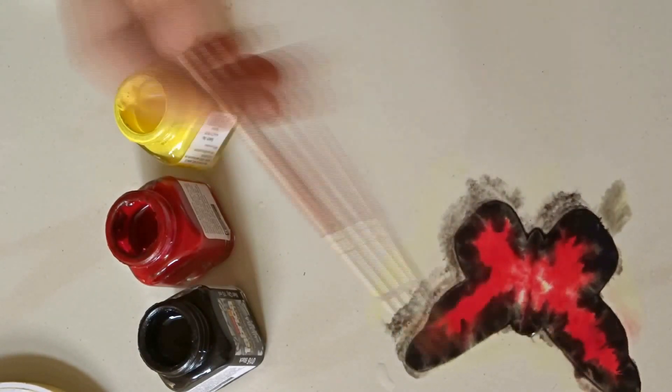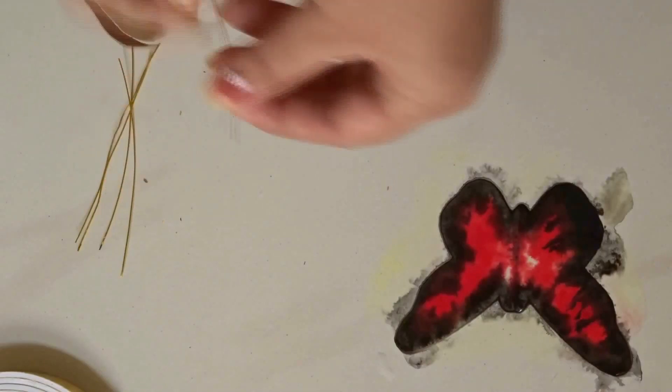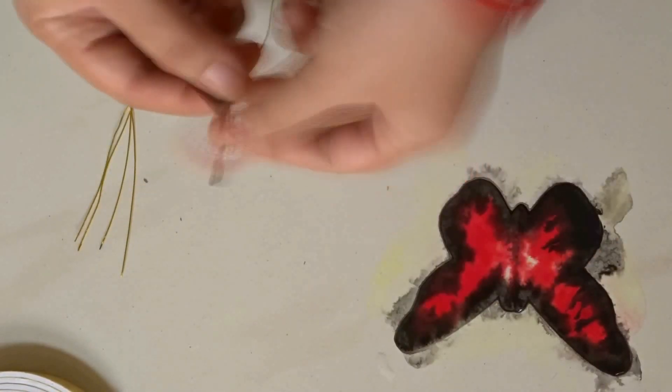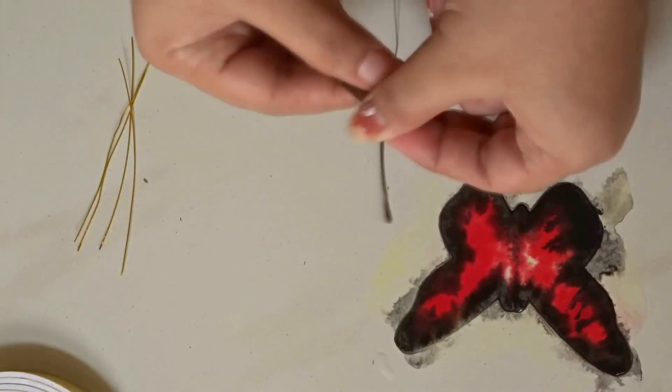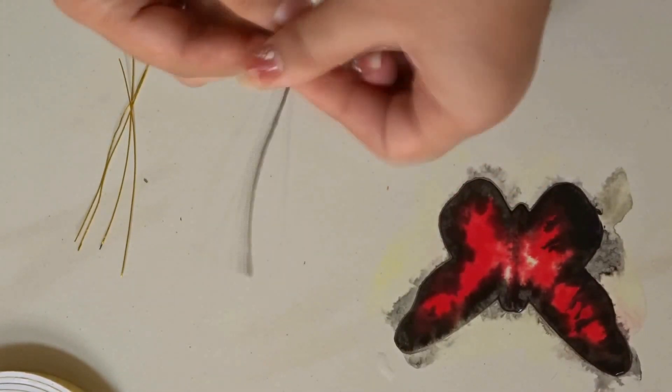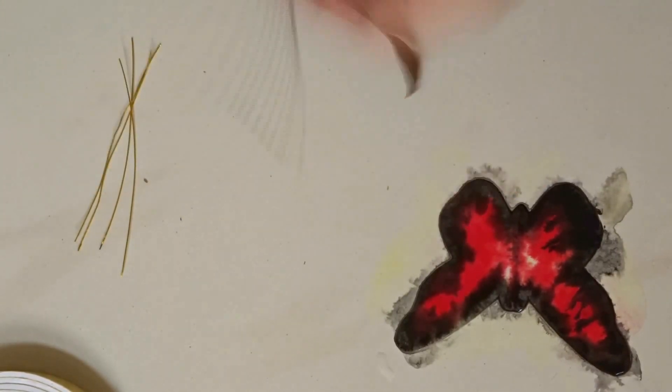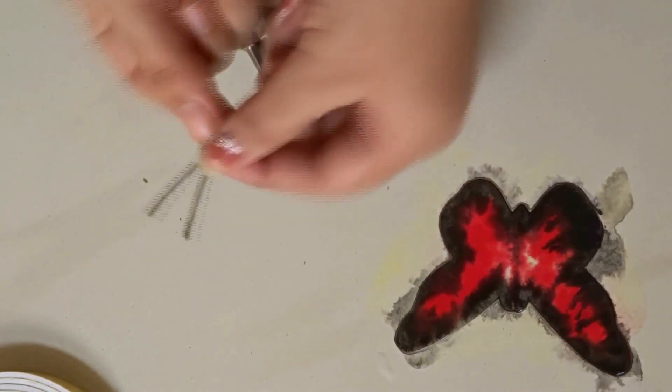Now let it dry naturally, or you can use your hair dryer. While it's drying, we'll make the antennas of the butterfly. Take a wire and wrap it with floral tape, then give it a shape like this and curve the tips by using the round nose plier.